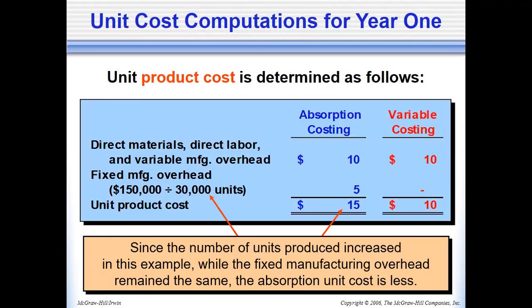The unit product cost under absorption costing is $15, while variable costing is $10. For variable costing, it will be lower than absorption costing with respect to the per unit fixed manufacturing overhead. Even if there are changes to the number of units produced, the variable costing per unit would remain equal. However, the fixed manufacturing overhead per unit will change because the number of units produced changed — it increased. Therefore, the fixed total stays the same, but the per unit amount decreases. That's cost behavior.